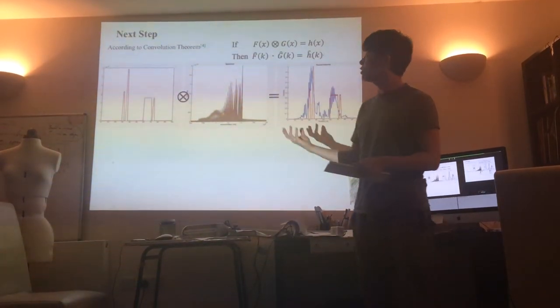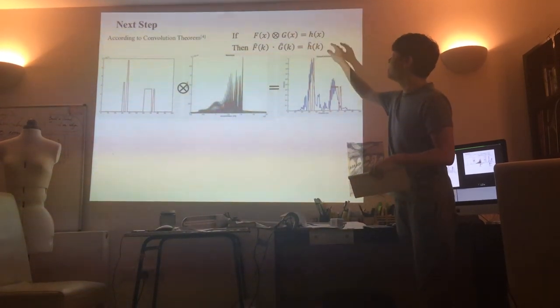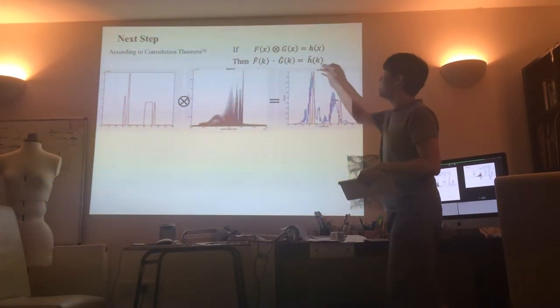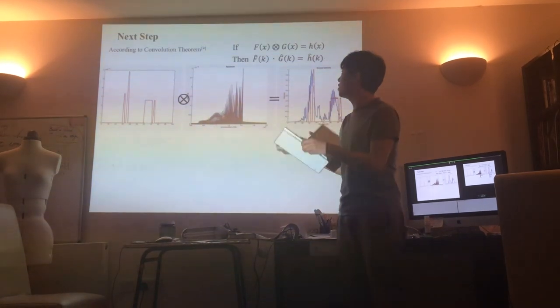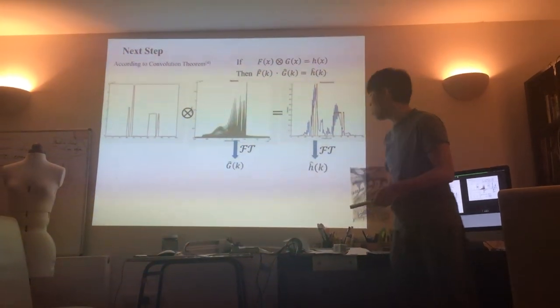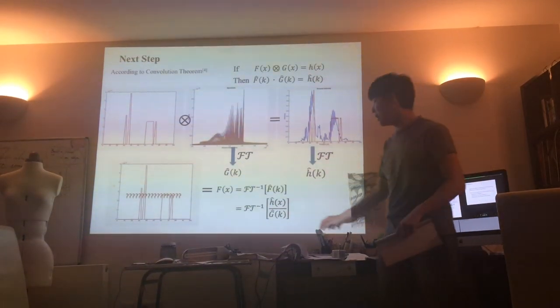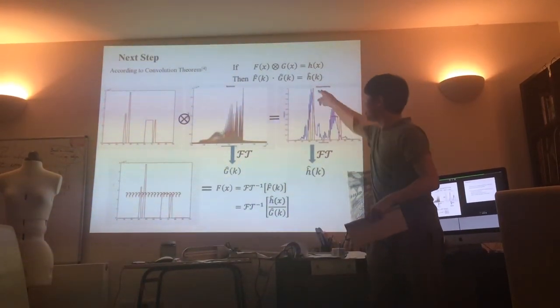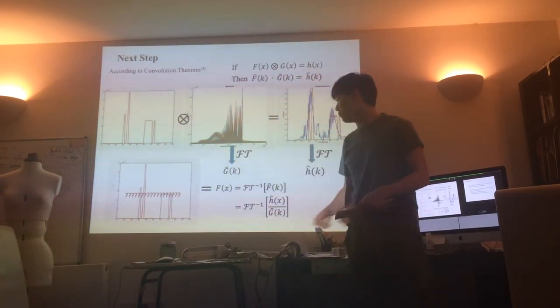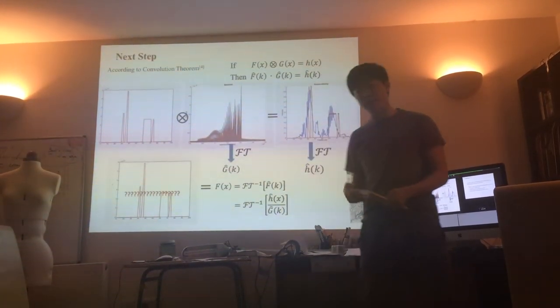Now we can apply what's called convolution theory which states that if I have F tensor G equal to H, then the Fourier transform of H is equal to the product of the two Fourier transforms. What that means is we can take Fourier transform of these two graphs to obtain H hat and G hat. We use H hat divided by G hat to obtain the Fk, hence inverse Fourier transform to get what my satellite actually sees.